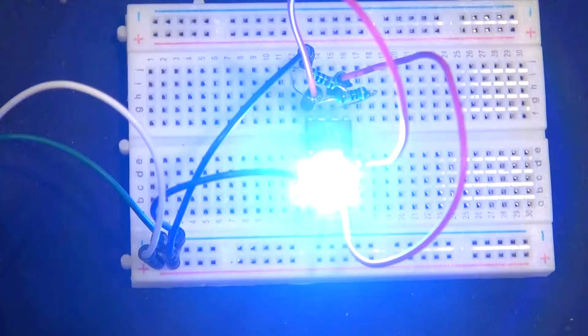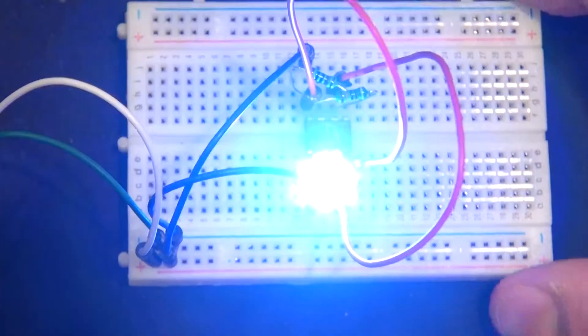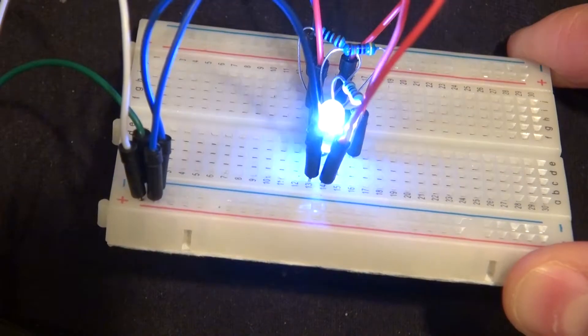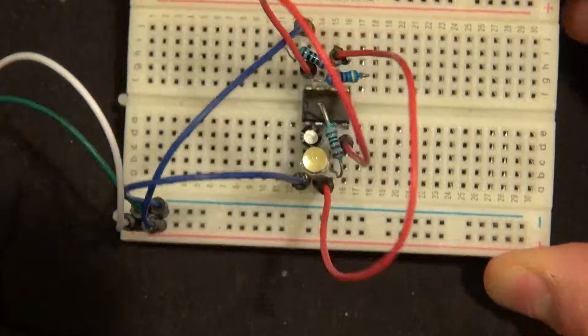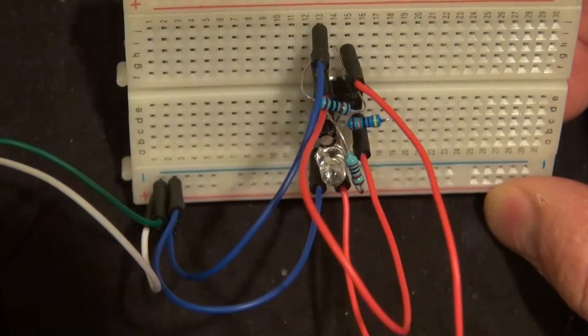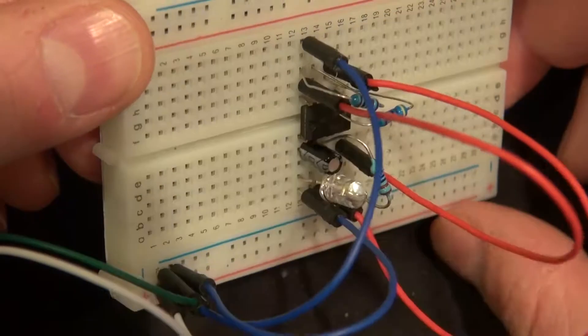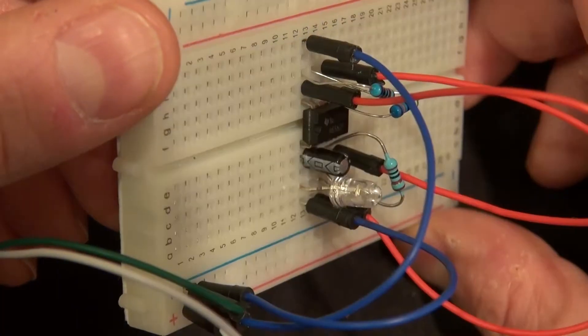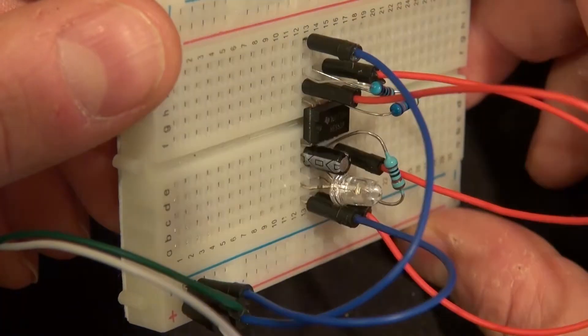And now your LED is now blinking. And there you have it. A blinking LED using a 555 timer.